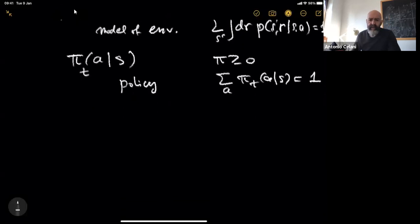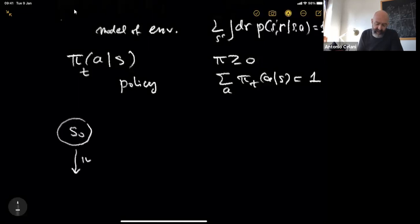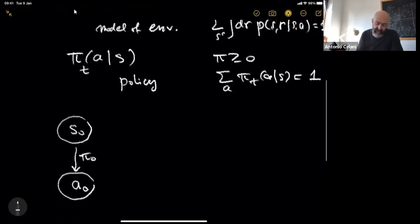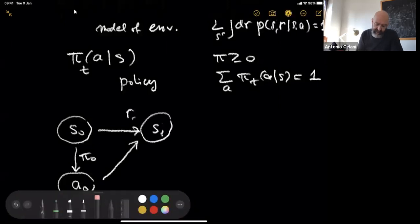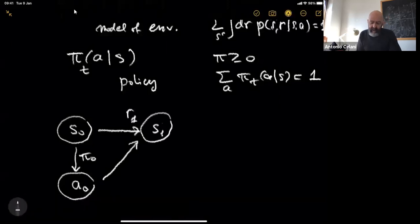There are two ways of representing graphically a Markov decision process. One is in terms of a time-directed graph. Suppose we start from state s₀. Then using policy π₀, we extract one random action according to that probability distribution, which gives us action a₀. Then according to the transition probability p, these two together generate a new state s', and in the process they also produce a reward R₁. These two arrows are given by the probability transition p.